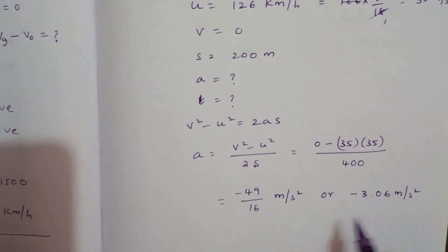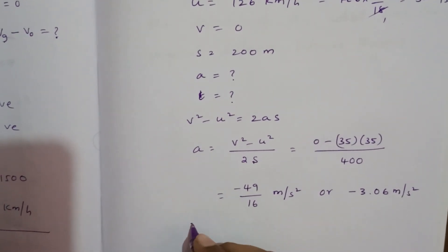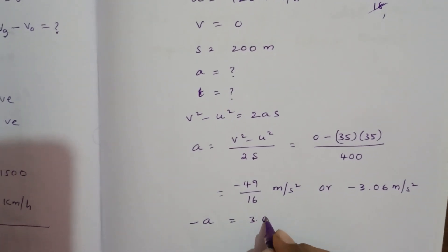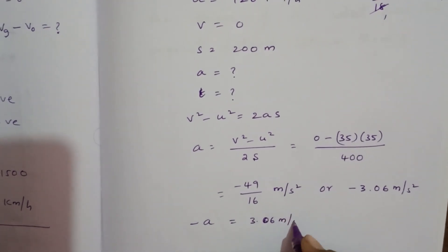That minus indicates it is retardation. So the retardation is 3.06 m per second square.